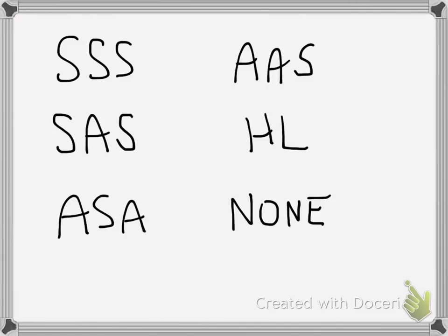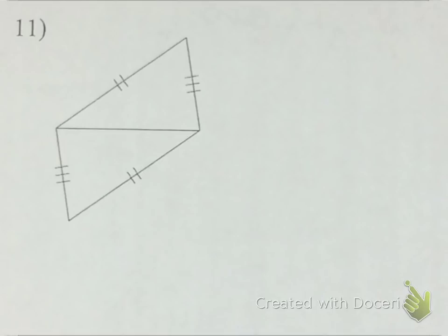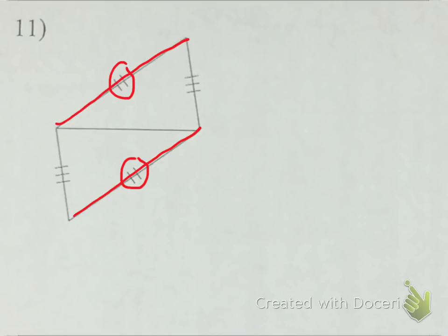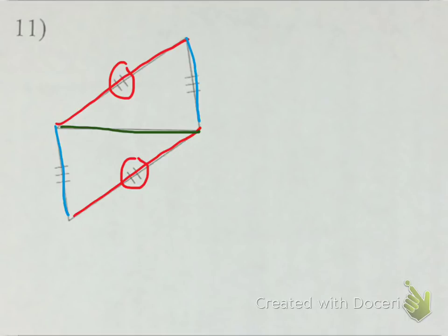Let's take a look and see what each one of these looks like as a picture. This is what side, side, side looks like. I'll go ahead and change some of the colors. You have this side here as congruent to this side on these particular triangles. You also have these two sides given to you as congruent. And now all you need is the third side — if you look right there in the middle of the picture, they both share that particular side. So you're going to be able to say by SSS that these two triangles are congruent. All three sides match up with the three sides of the other triangle.